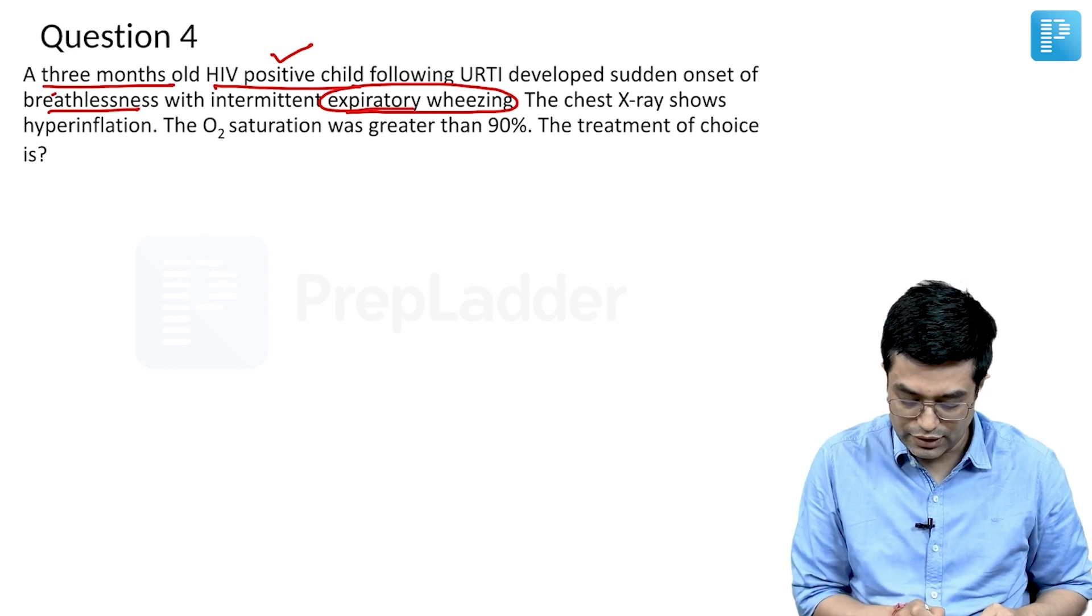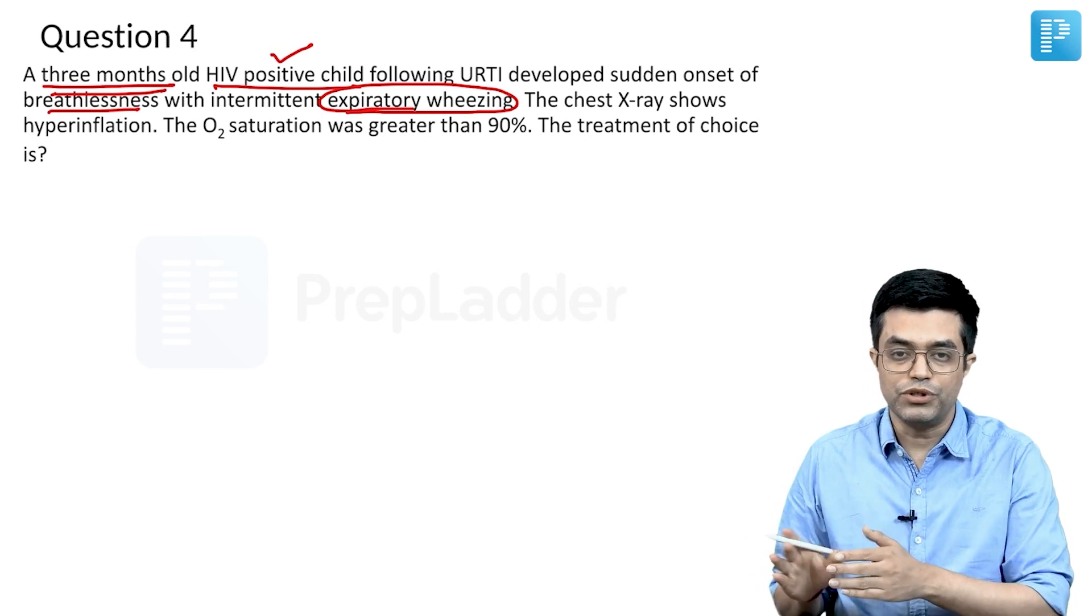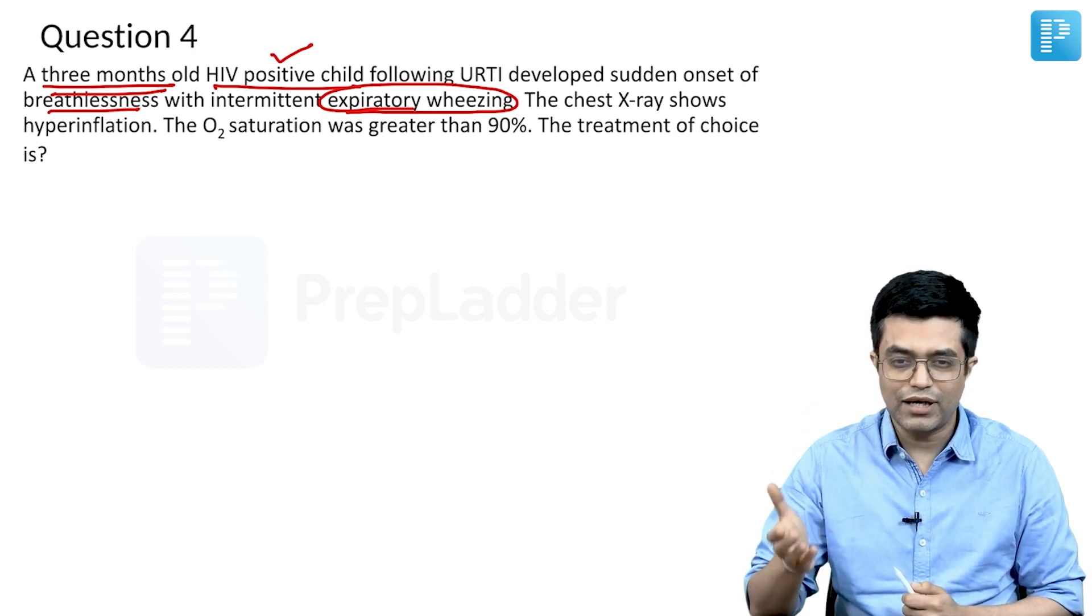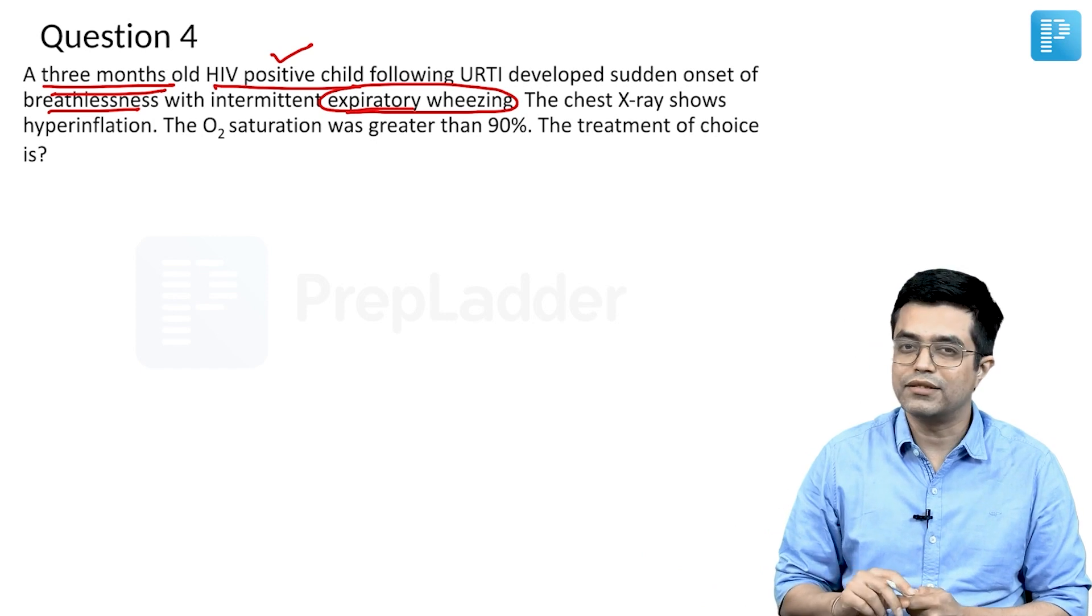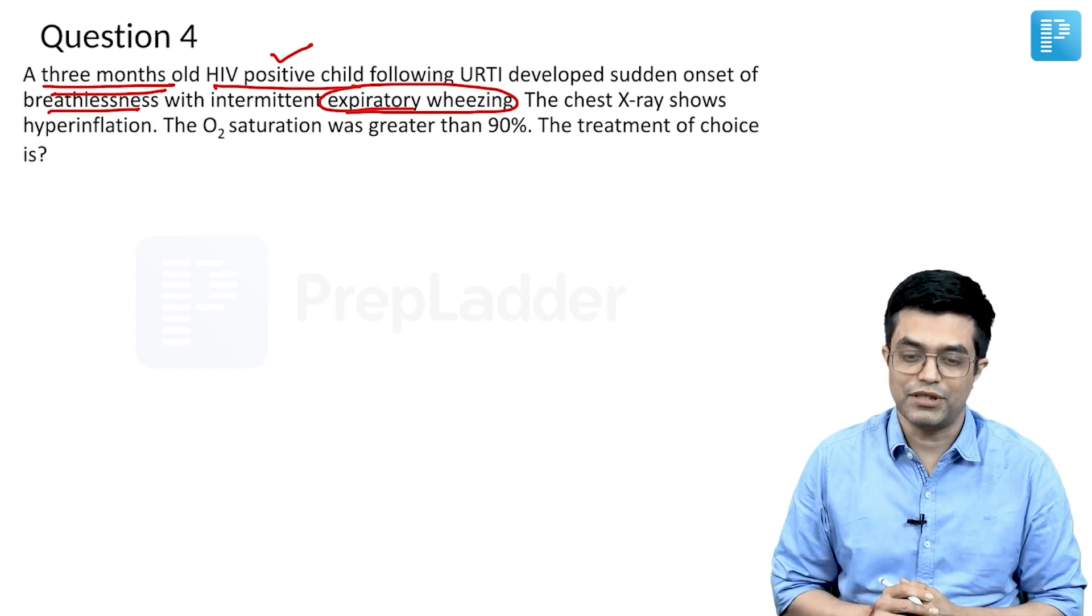Any child between 2 months to 2 years who develops URI-like symptoms followed by onset of wheezing and crackles, think of bronchiolitis. This is an immunosuppressed child.